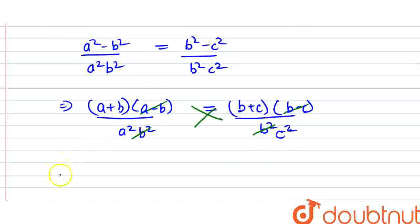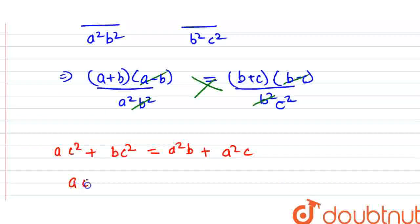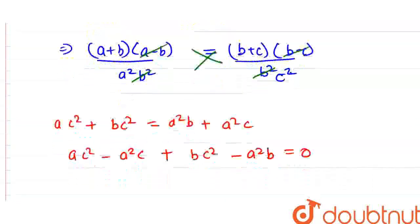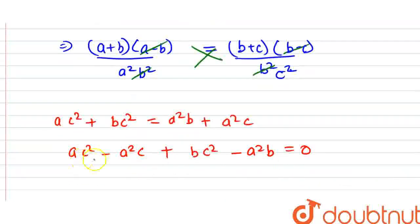Now we will cross multiply. We will see A into C square plus B into C square equals A square B plus A square into C. We will have A C square minus A square C plus B C square minus A square B equals zero.